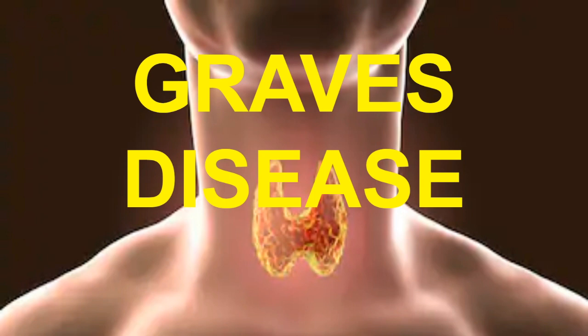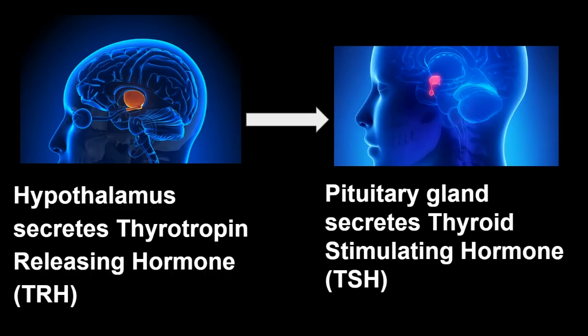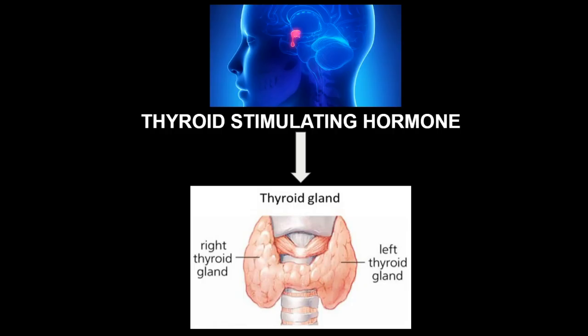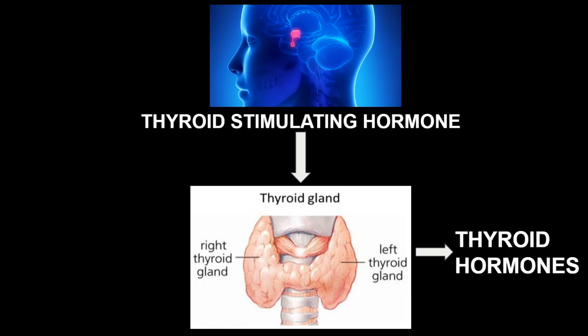Let's discuss about Graves' disease. Before going into detail, you should know what actually causes the thyroid gland to secrete the thyroid hormone. Normally, the hypothalamus actually secretes thyrotropin-releasing hormone (TRH). This TRH hormone acts on the pituitary gland and causes it to secrete the thyroid stimulating hormone, that is TSH. This TSH, which is released from the pituitary gland, then acts on the thyroid gland and causes it to secrete the thyroid hormone.